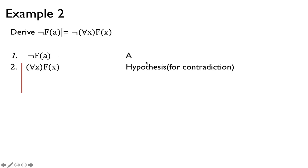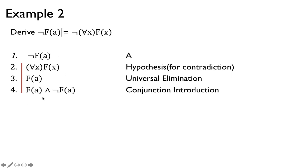So this is the hypothesis inference rule. We suppose for all x, f of x — this is a hypothesis, and we're hoping to get a contradiction. By hypothesizing this, we gain more information. Assuming this, we can get f of a because this is true for all x — that's universal elimination again. Now we see f of a and not f of a, so this is a contradiction. We introduce the conjunction, notice it's a contradiction, discharge the hypothesis, and conclude the negation.